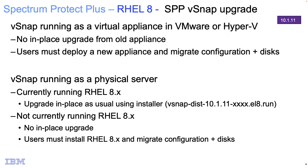If you are using a physical server and you're currently running Red Hat Enterprise Linux 8, you're good — there are no changes necessary. You're going to upgrade in place using the installer delivered on FixCentral from IBM. However, if you are running a version of Red Hat Enterprise Linux that is not 8.X, or a version of CentOS which used to be supported, then as a physical server there will be no in-place upgrade, and you must install RHEL 8 and do this migration of the configuration and disks, just as if you're running the appliance.